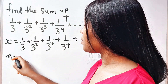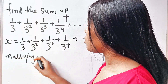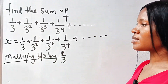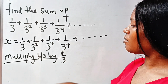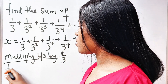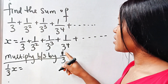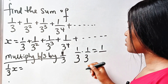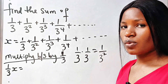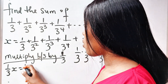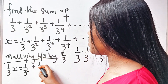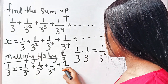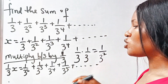If we decide to multiply both sides by 1 over 3, we are going to have x times 1 over 3. So we have 1 over 3x is equal to 1 over 3 times 1 over 3. 1 times 1 is 1, 3 times 3 is 9, which is written as 3 squared. So we are going to have 1 over 3 squared, and it will continue to increase by 1 power of 3: 1 over 3 to the power of 3 plus 1 over 3 to the power of 4 plus 1 over 3 to the power of 5, and it continues like that.